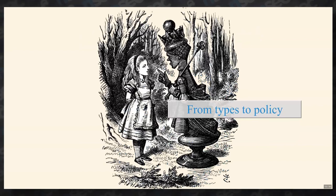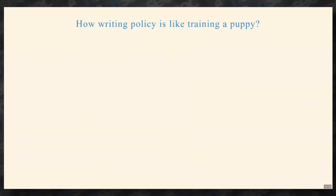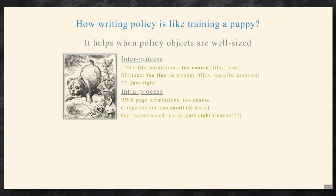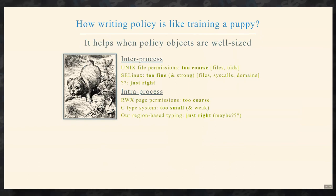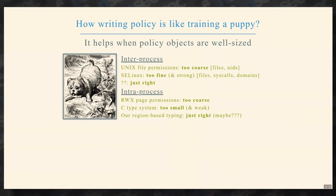Moving from types to policy — how is writing policy like training a puppy? It helps when the policy objects are well-sized. For inter-process policies, Unix file permissions are great but can sometimes be too coarse depending on your attack model, which is why SELinux was developed to fill in those gaps. It's kind of hard to come up with something just right.